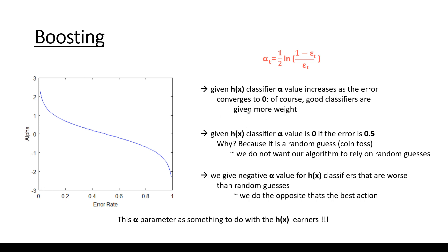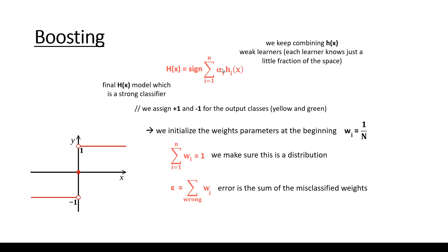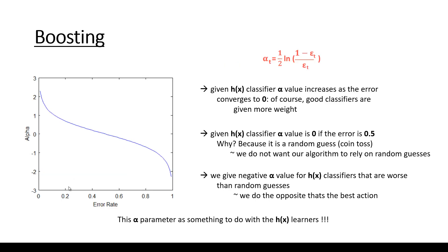Good classifiers are given more weight. The alpha value controls the given weak learner. If alpha is zero, it means we do not care about that given learner. If the value of alpha is large, for example plus 1, plus 2, plus 3 or something like this, it means we give more weight to that learner. So in the region where the error rate is small, the alpha value is going to be plus 1, plus 2, and so on — we give more weight to classifiers with small error rate.